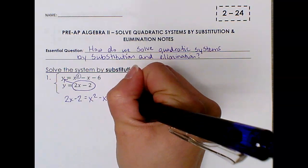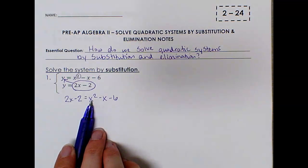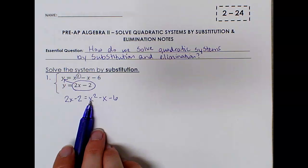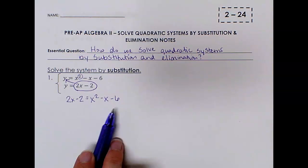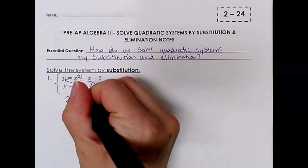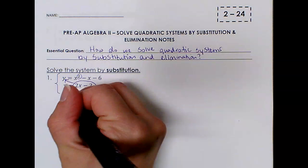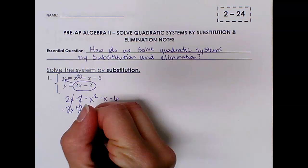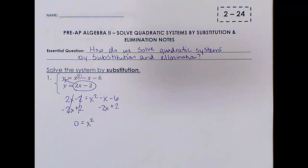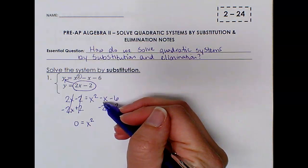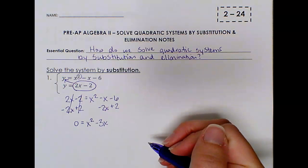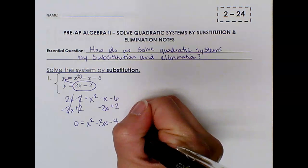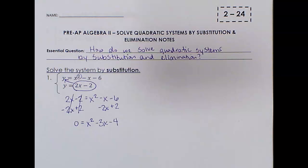So here instead of y equals, I now have 2x minus 2 equals x squared minus x minus 6. Now I notice that x squared is positive, so since this is a quadratic, I'd like to move everything in my equation over to the side with the positive x squared. So I'm going to move this minus 2 over by adding 2, and I'm also going to move this positive 2x over by subtracting 2x. So now on the left side I'll have 0. On the right side, x squared remains the same, negative x minus 2x gives negative 3x, and negative 6 plus 2 gives negative 4. So we have the quadratic in standard form, 0 equals x squared minus 3x minus 4.